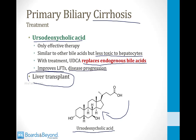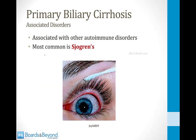It's less clear whether ursodeoxycholic acid helps with symptoms like itching and fatigue, but it is often administered especially early in the course of disease to try to slow progression to the need for a liver transplant. It's high yield to know that primary biliary cirrhosis is associated with many other autoimmune disorders. One of the most common associations is Sjögren's syndrome — a condition where people develop dry eyes and dry mouth.